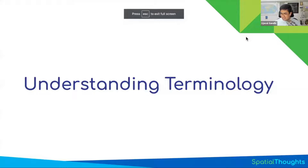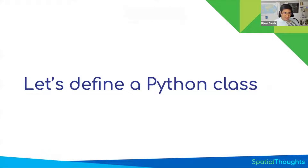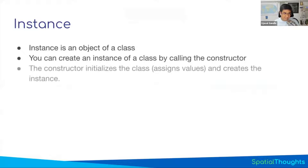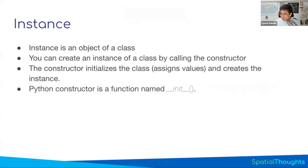We've learned about constructors, objects, methods, and self — let's understand those. When we have a class, we have to create an object, which means we need to initialize it. You initialize it by calling the constructor. The constructor assigns the values from the parameters and creates the instance. The Python constructor is a special function named __init__ — double underscore, init, double underscore. Whenever a class is initialized, that function is called, whatever is inside it will run, and you'll get a new object.